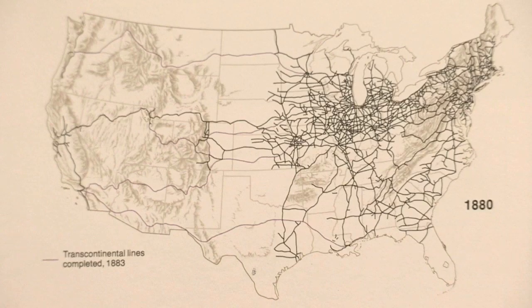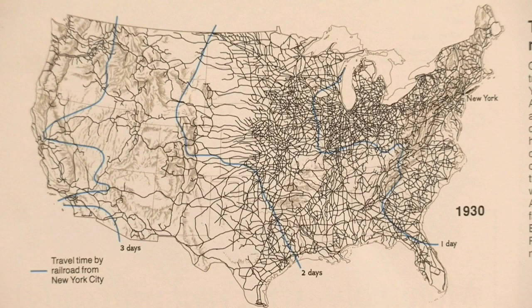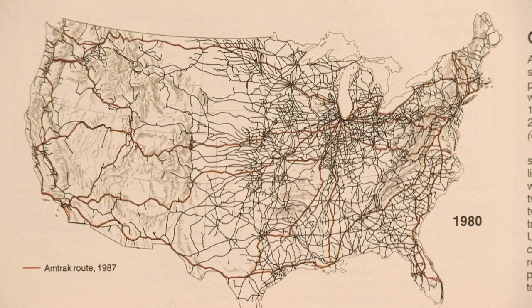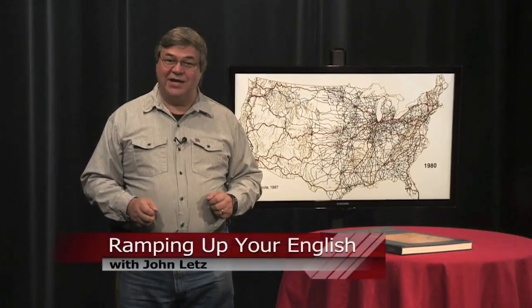Readers can see the expanding effects of the Transcontinental Railroad and the erasing of many railroads after World War II, when automobiles, trucks and airlines sapped away business from many of the railroads of the time. The atlas also contains regional maps of the United States. If you want to see graphic illustrations of railroad history, get your hands on a copy of National Geographic's Historical Atlas of the United States. You can probably find one at your local library. For Ramping Up Your English, I'm John Letts.